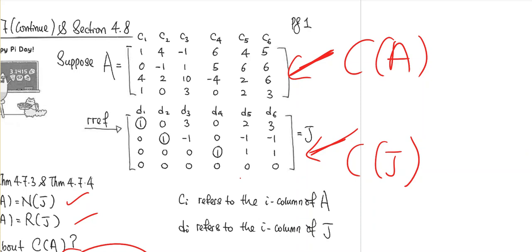This is one of the questions I would always ask in class to see how students react, and most students can see that the column space of A and the column space of J are actually different.